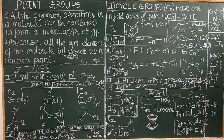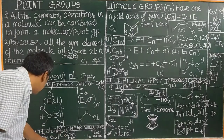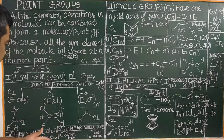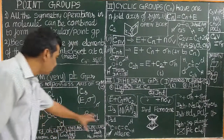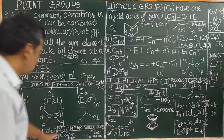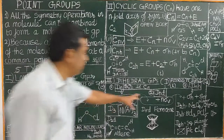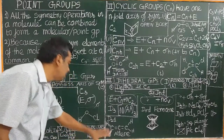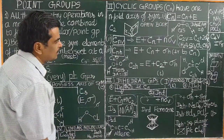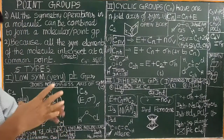Very high symmetry point groups include tetrahedral geometry, octahedral geometry, and icosahedral geometry. Icosahedral geometry is possessed by fullerenes, which have a structure similar to a soccer football. There are also two types of linear molecules: C-infinity-V and D-infinity-H. We will see these two further in the next class, along with a point group flowchart showing how to find the point group of a molecule.